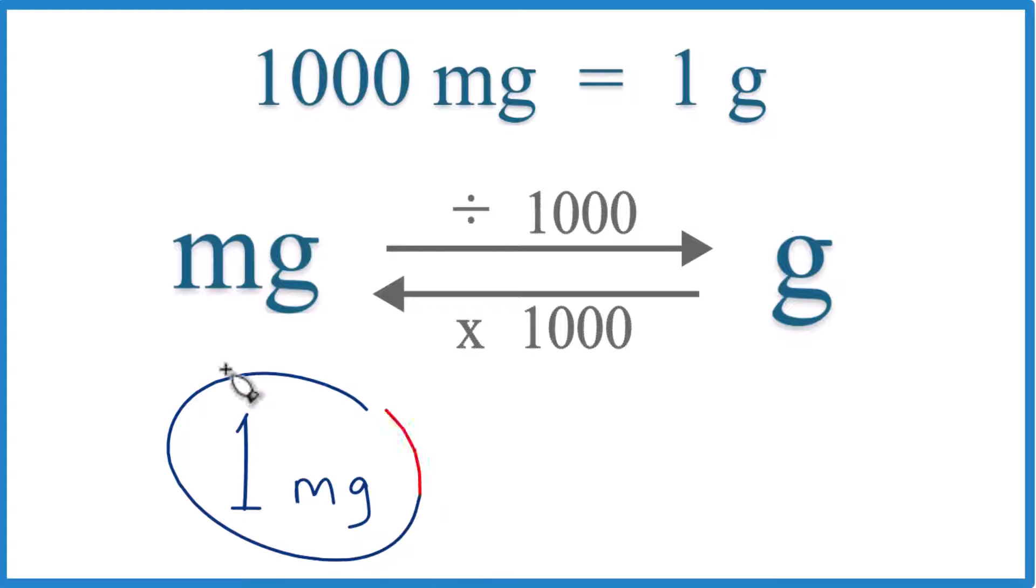So if you want to convert one milligram to grams, here's how you do it. You need to know that there are 1,000 milligrams in one gram. So one gram equals 1,000 milligrams, and that's our conversion factor.